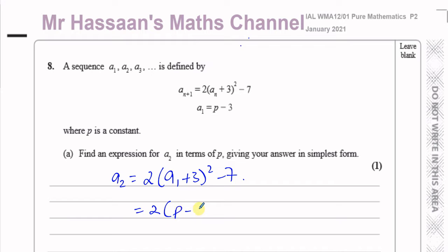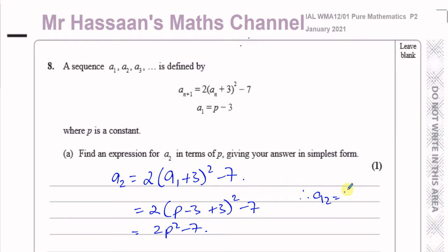So you have 2 times (p minus 3 plus 3) squared minus 7. The minus 3 plus 3 gives 0, so that gives us 2 times p squared, which is 2p squared minus 7. Therefore a2 is equal to 2p squared minus 7. That's the answer to part a.